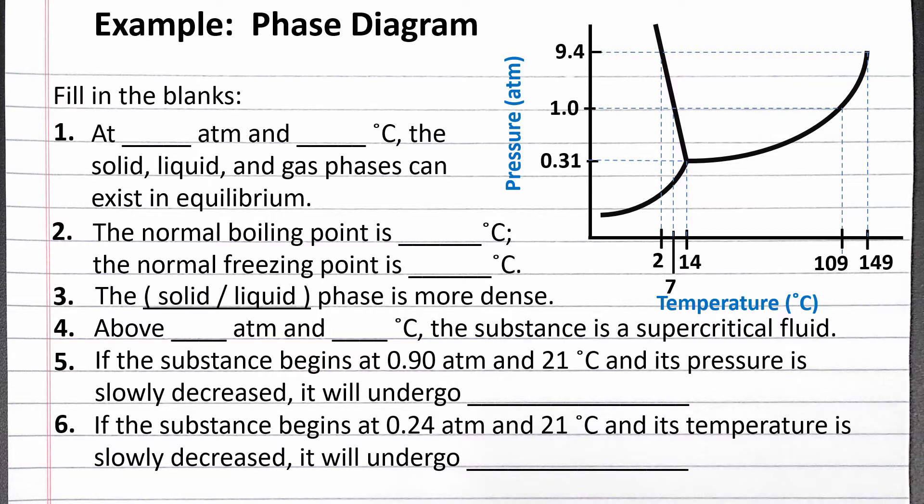We can start by identifying the solid, liquid, and gas regions of this phase diagram. The lines represent the fusion, vaporization, and sublimation curves, where more than one phase can exist in equilibrium.